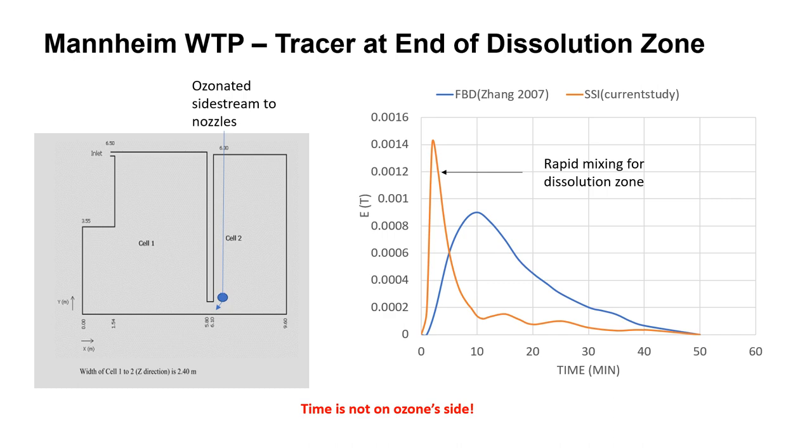I also did a comparison of tracer studies that were originally done for the same plant by Zhang et al in 2007. They did a great job looking at how the tracer studies changed by adding or removing diffuser discs and found that reducing diffuser discs reduced short circuiting. What you're looking at here are the results from CFD tracer studies at the end of cell two. With the orange curve we have closer to CSTR behavior which we want for mixing in the dissolution zone. It's rapidly mixed and dissolved and the overall concentration is fairly uniform compared to what you would see with a fine bubble diffuser system in the same system. We don't want ozone to linger in the water for too long. We want ozone to get the job done and move on.